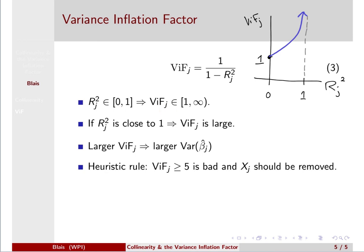So as rj-squared is getting close to 1, we're moving to the right in the domain here, the variance inflation factor is getting big. That's a bad sign for including Xj as a predictor. So once we start to see this variance inflation factor get large, we want to start thinking about removing Xj from our set of predictors.